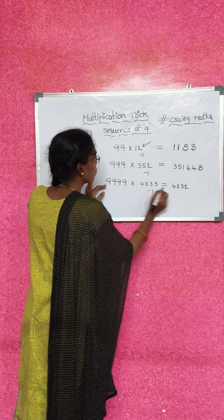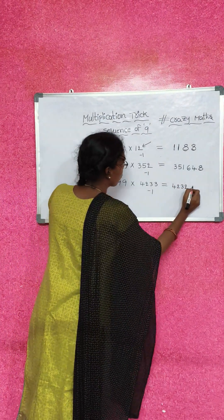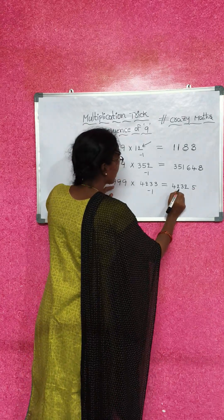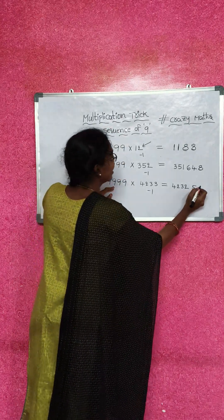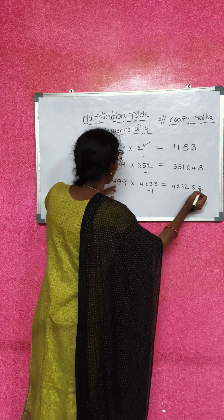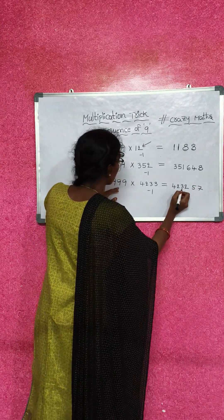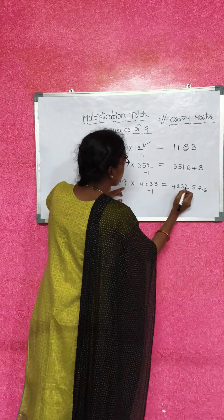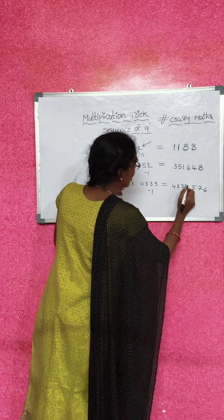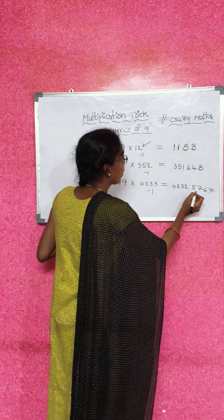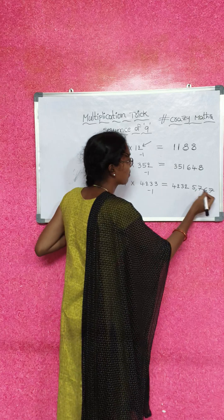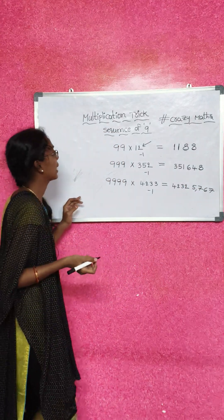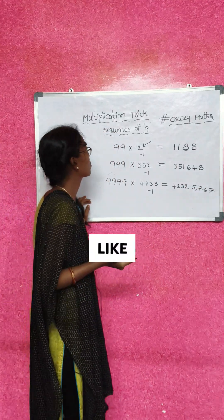Note: 2 times 3. Now subtract each digit from 9: 9 minus 4 equals 5; 9 minus 2 equals 7 (2nd digit); 9 minus 3 equals 6; 9 minus 2 equals 7. The result is 5762.